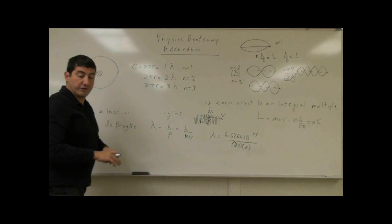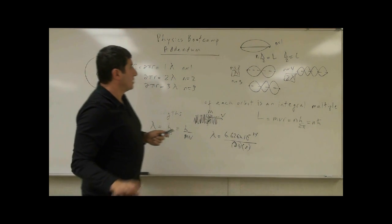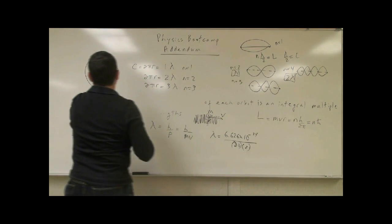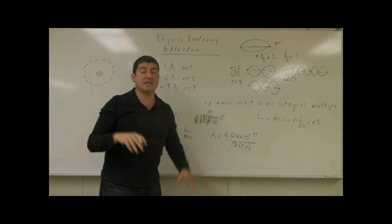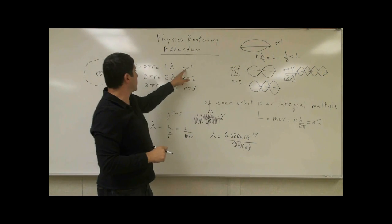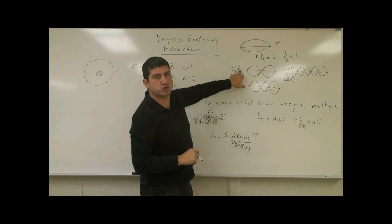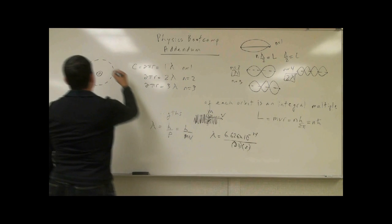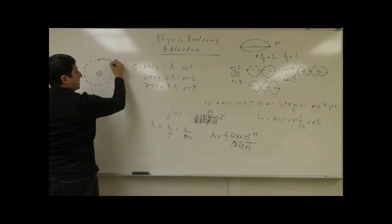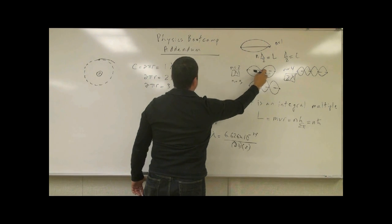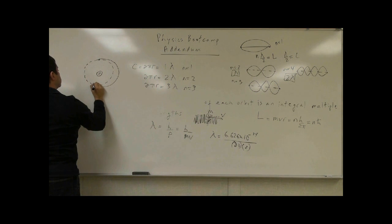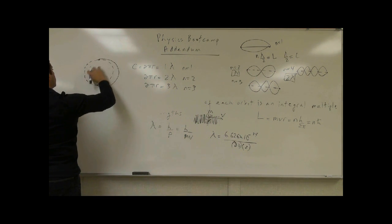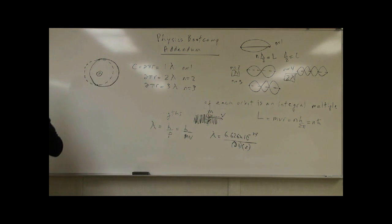If we visualize this, the middle line represents the circumference around the atom. The n equals 1 orbit requires fitting one complete wave — equivalent to the n equals 2 case for a string. The wave goes out and comes back in, completing one full wavelength around the nucleus.